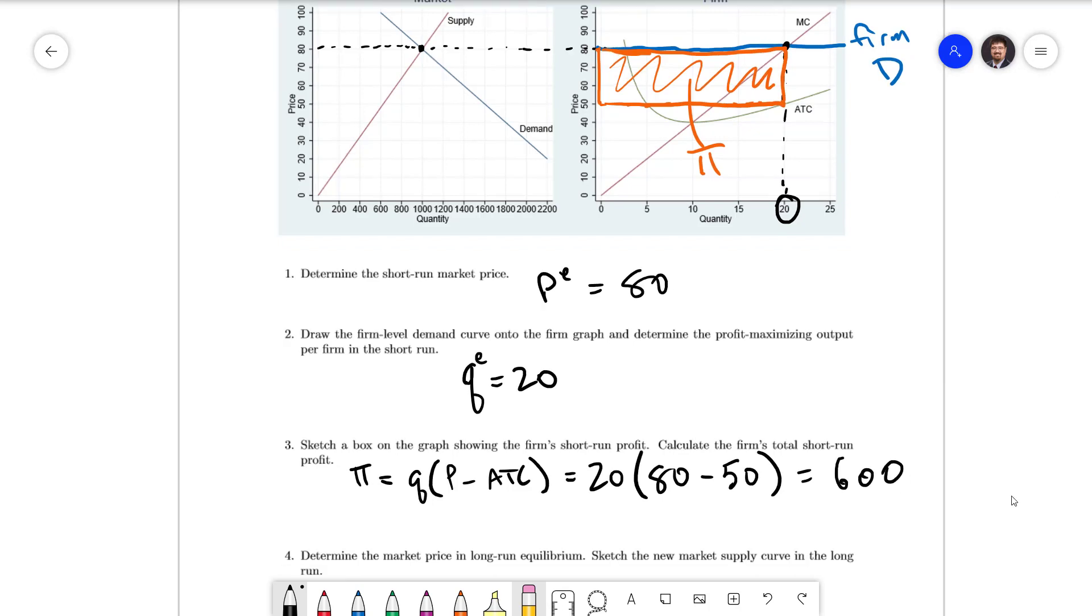The last question is to determine the market price in the long run equilibrium, and then we're going to sketch the new market supply curve in the long run. The key thing to remember here is the long run price is going to be the minimum of the ATC, which is where the marginal cost crosses the ATC. We know that's going to be 40.